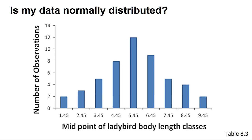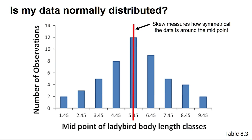Fortunately, there are a couple of other indicators we can assess. Normal data sets are symmetrical, so we can look at the skew value, which should be zero for a perfectly symmetrical data set. This is also why we find the mean and median are the same in normally distributed data. In general, a skew value between minus 2 and 2 can be consistent with a normal distribution.